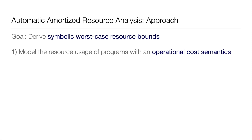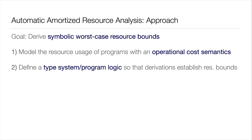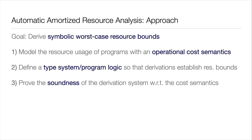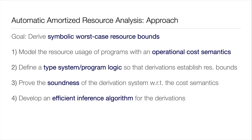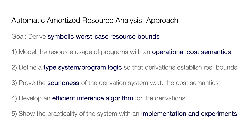How does this approach work at a high level? The goal is to derive these bounds. First, we define a mathematical model of the resource cost — an operational cost semantics. We then define a type system or program logic to reason about the cost and prove bounds. We show this type system or program logic is sound with respect to the mathematical model. Then we come up with an inference algorithm to automate the derivation of the types or triples, implement the system, and show with experiments that it's practical. It's undecidable to derive these resource bounds in general, but you can still do it for most programs written in practice.